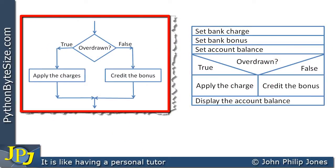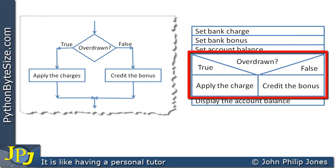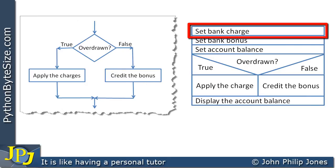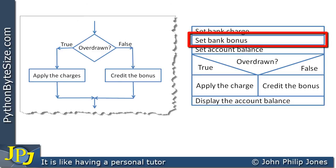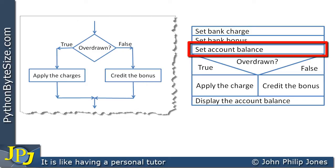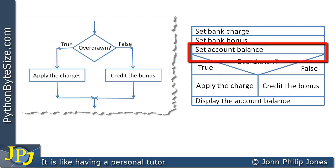This represents the flowchart for the if-else construct. This part of a Nassi-Shneiderman chart is how we represent the if-else construct in Python. The overall Nassi-Shneiderman chart shows us the solution to the specification we've been considering in this video. Here, you can see that we are asking our program, when we implement it, to set the bank charge, then set the bank bonus, and then set an account balance.